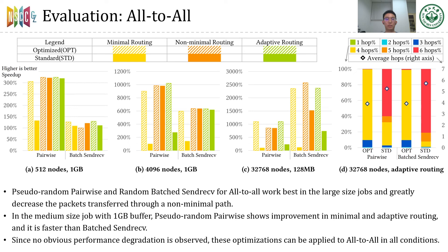Here is the result of MPI all-to-all operation. The three figures on the left show the speedup for small, medium, and large-sized jobs. The slowest one in each situation is set as the baseline at 100%; a higher bar means faster. The solid bar shows standard algorithms and the shadowed bar shows our optimizations. In small and medium-sized jobs, our optimization mainly speeds up all-to-all with minimal routing, and almost catches up to the speed of adaptive routing. Our optimization works best in large-sized jobs. The hop statistics show our optimization reduces average hops and decreases packets transferred through non-minimal paths. Since no obvious performance degradation is observed, this optimization can be applied across all conditions.